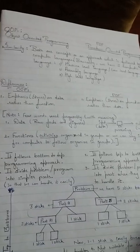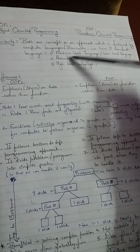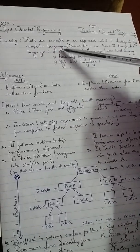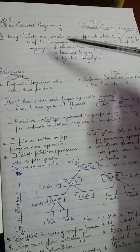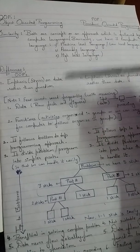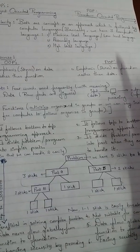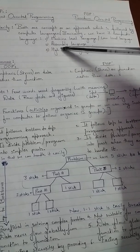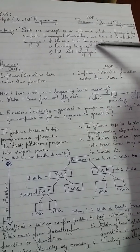First, let's look at the similarities of both concepts. Both are approaches followed by a computer language. A computer language is a language used to communicate with a computer, just as we have languages in India to communicate with each other. If we want to communicate with a computer, we need a computer language. We have machine level language, assembly language, and high-level language.